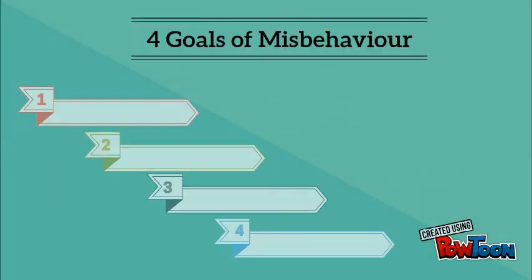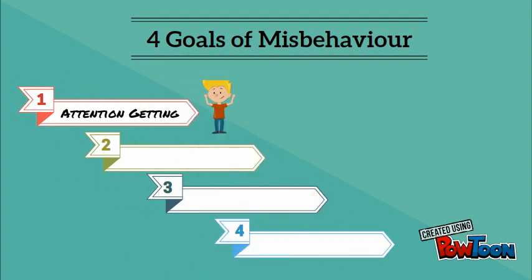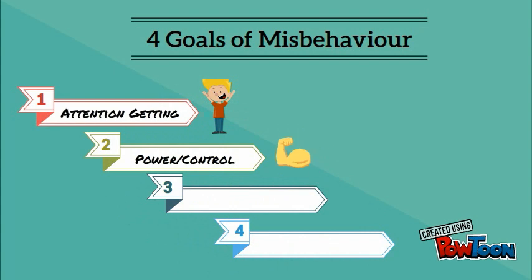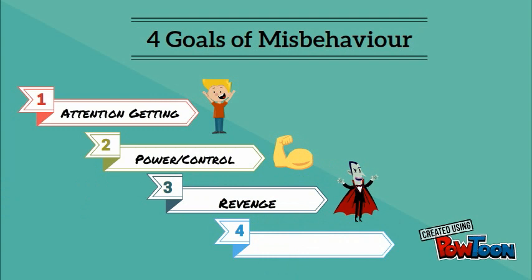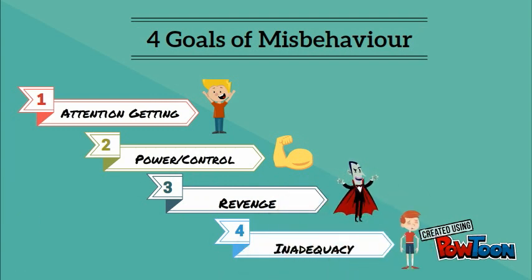Dreikers proposed four types of misbehavior: Attention Getting, Power and Control, Revenge, and Helplessness/Inadequacy.